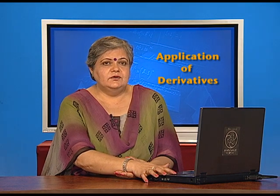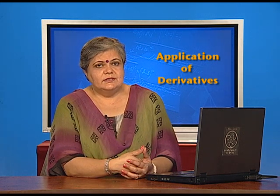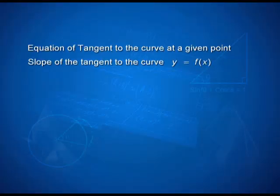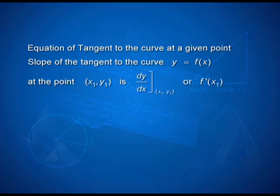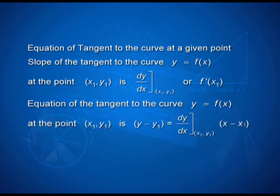Once this is understood, what we need to figure out is how to find the equation of the tangent to the curve at a given point. What we have just discovered is that the slope of the tangent to the curve at the point (x₁, y₁) is the value of the derivative at that point, represented as dy/dx at (x₁, y₁) or f'(x₁). So the equation of the tangent to the curve y = f(x) at the point (x₁, y₁) is: y − y₁ = (dy/dx)|_(x₁,y₁) · (x − x₁), coming from the simple slope–point form of the straight line: y − y₁ = m(x − x₁).